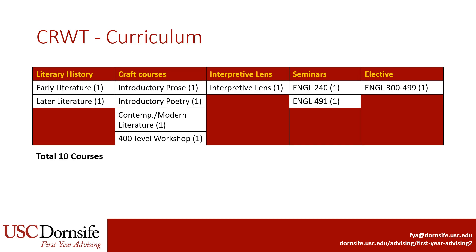We will take a look at the English Creative Writing major. The major requires ten courses, no more than four of which may be at the lower division 100 or 200 level. The Creative Writing major can be broken down into five groups of requirements.